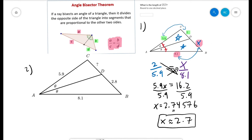By the angle bisector theorem, we can say that, for example, x over 5.9, that's x over 5.9, equals 2.8 over 8.1. So again, we went this way, but we could have gone the other way. You could have done 5.9 over x and 8.1 over 2.8. That would have worked just as well.